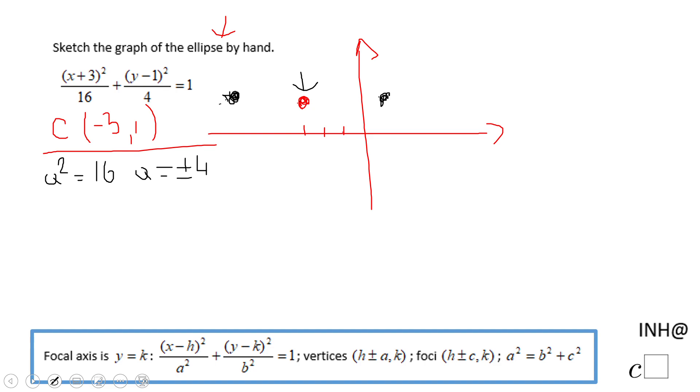And that will be negative 7 and 1. Those are the two vertices on the focal axis, which is y equals 1, by the way. You see it here.